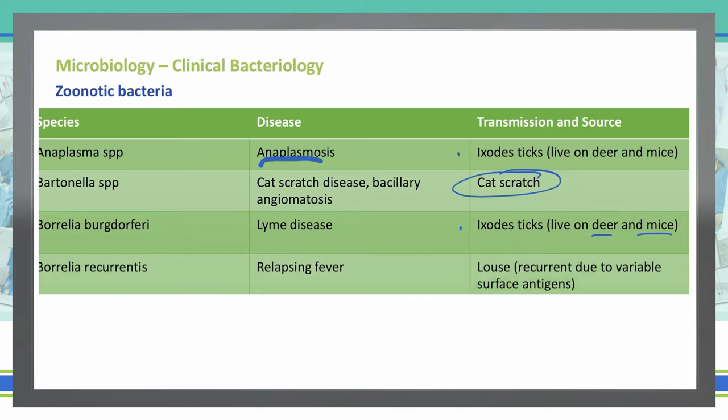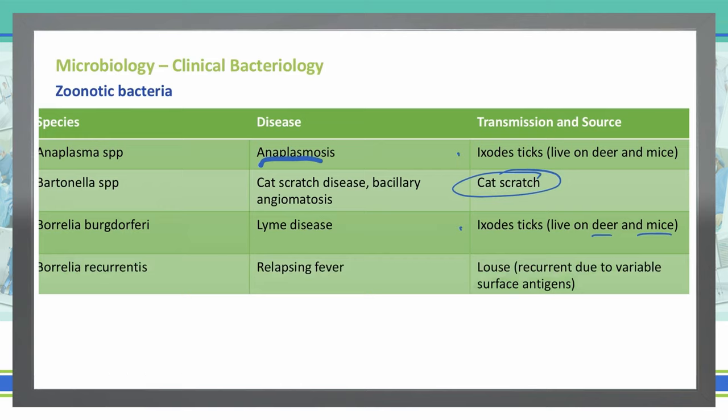Borrelia recurrentis causes relapsing fever, and this comes from louse — which is the singular form of lice, lice being the plural. The relapses are due to variable surface antigens, which is a key feature of this organism.